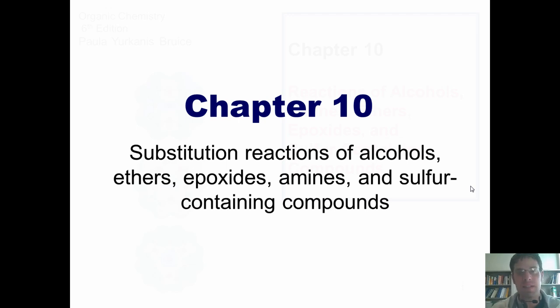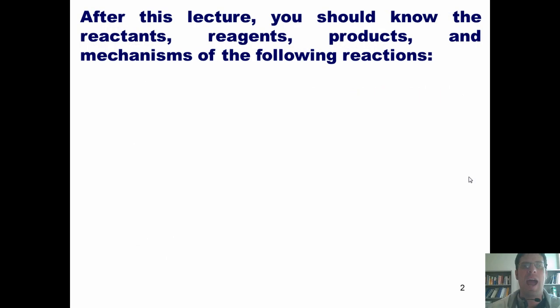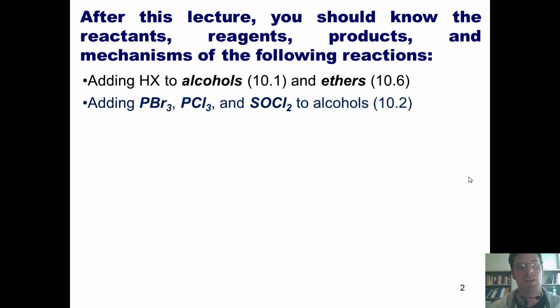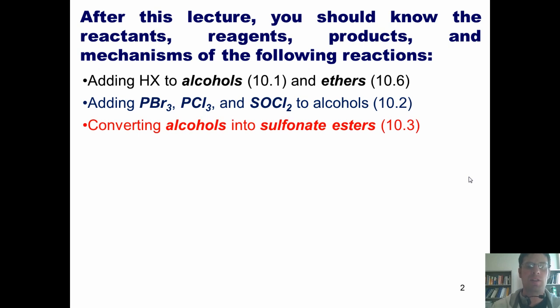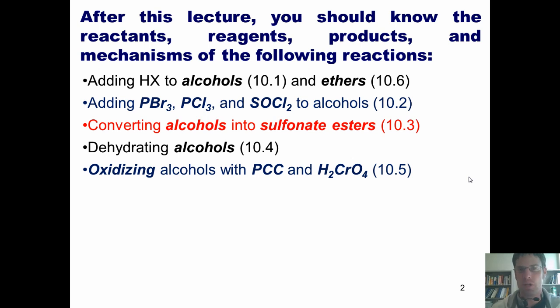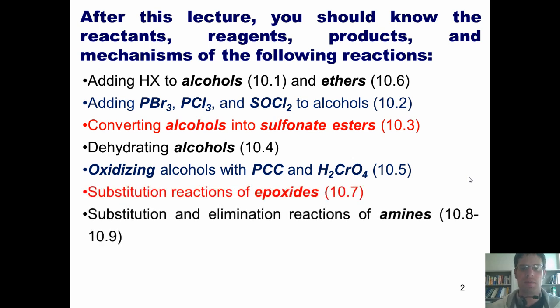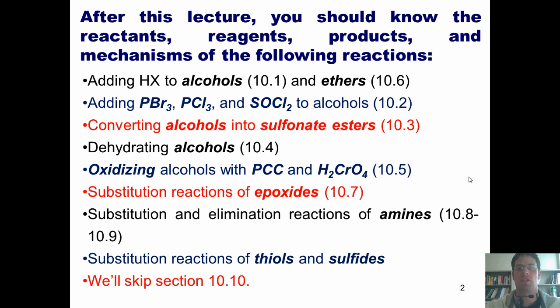In this chapter, we're going to learn about various substitution reactions involving alcohols, ethers, epoxides, amines, and sulfur-containing compounds. After this lecture, you guys should know the reactants, reagents, products, and mechanisms of the following reactions: Adding HX to alcohols and ethers. Adding PBr3, PCl3, and SOCl2 to alcohols. Converting alcohols to sulfonate esters. Dehydrating alcohols. Oxidizing alcohols with PCC and dihydrogen chromate, as well as some other oxidizing agents I'll show you. Substitution reactions of epoxides. Substitution and elimination reactions of amines. And substitution reactions of thiols and sulfides. End note, we will skip section 10.10. As I always do, each of these topics is covered in the respective sections of our text labeled here. So let's begin.